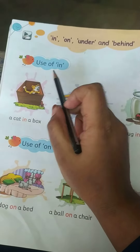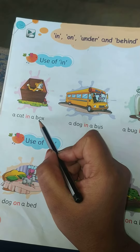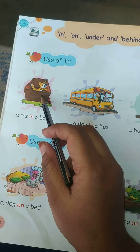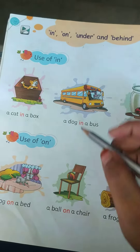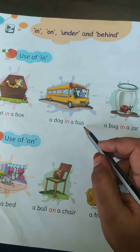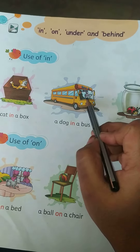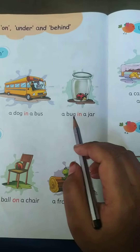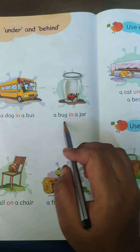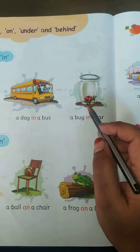Use of in: a cat in a box — this cat is in the box. A dog in a bus — the dog is in the bus. A bug in a jar — the bug is in the jar.